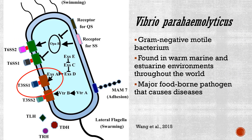Vibrio parahaemolyticus is a gram-negative bacterium that inhabits warm marine and estuarine environments across the globe. They have several tools that allow themselves to infect a host and cause disease. One of these tools is a type 3 secretion system, a process that allows the bacteria to inject harmful proteins and toxins into the host cell, which eventually kills it.